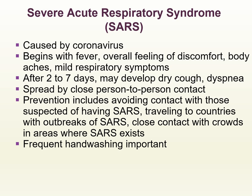Severe acute respiratory syndrome (SARS) is caused by a coronavirus that can lead to a life-threatening type of pneumonia. It begins with fever, feelings of discomfort, body aches, and mild respiratory symptoms. After a couple of days to a week, the patient may develop a dry cough and shortness of breath. It is spread by close person-to-person contact. To prevent it, avoid contact with anyone suspected of having SARS, avoid traveling to countries with an outbreak, and avoid crowded areas where SARS exists. Frequent hand-washing is extremely important.